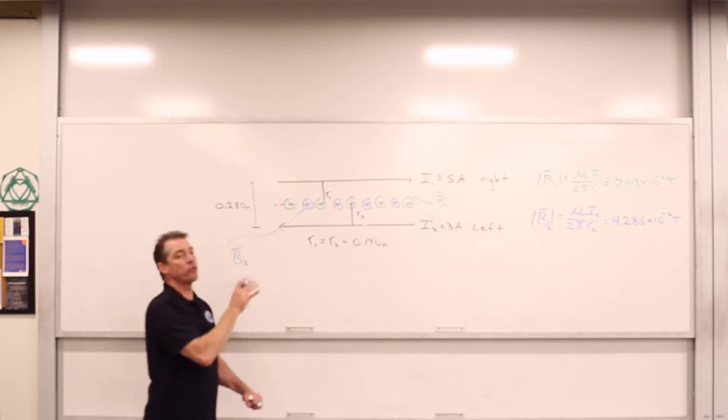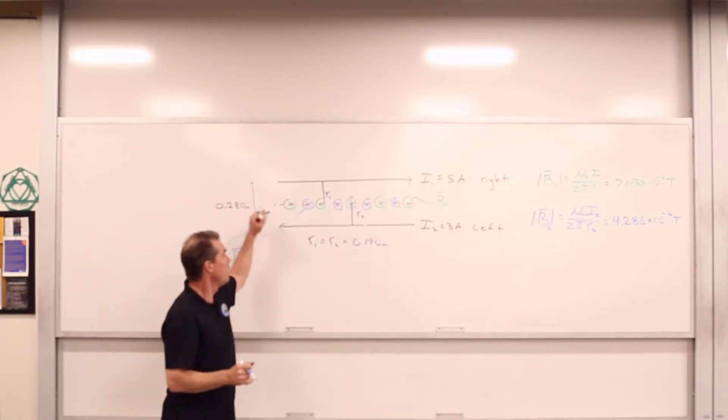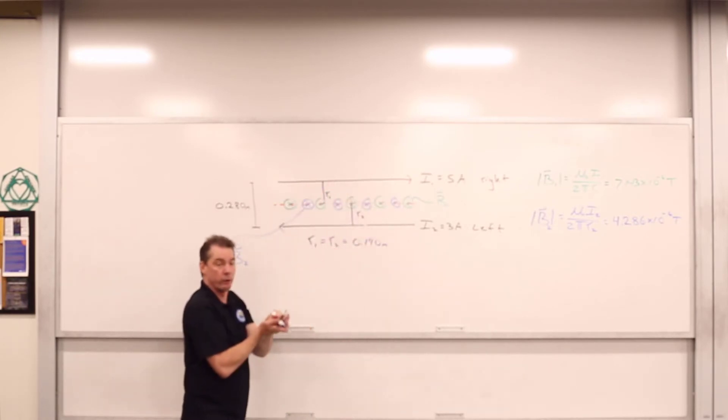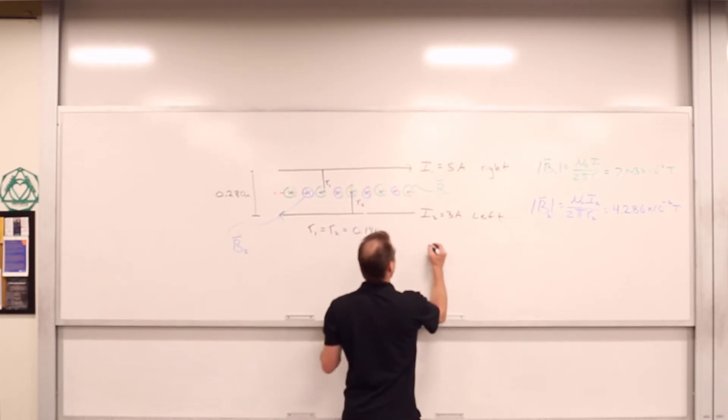So there's the two individual magnetic fields that current carrying wire number 1 and current carrying wire number 2 produce equidistant in between the two wires. The question really is, what is the net field at that location? So we want the net field.